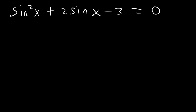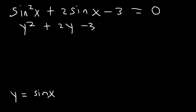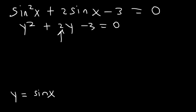You could factor by substitution. Let's pick a variable — let's say that y is equal to sine x. Therefore sine squared is y squared, and 2 sine x is 2y. So here we have a trinomial. To factor this trinomial we need to find a number that multiplies to the constant term negative 3 but adds to the middle coefficient 2. So what two numbers multiply to negative 3 but add to 2?